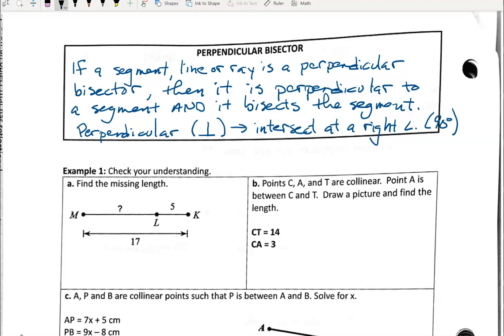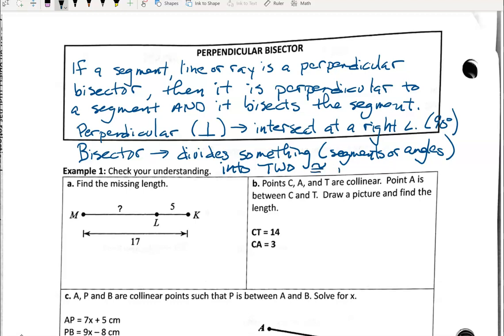A bisector divides something. Usually our somethings will be segments or angles into two congruent parts. If we're bisecting a segment, we would get two congruent segments. If we're bisecting an angle, we would get two congruent angles.